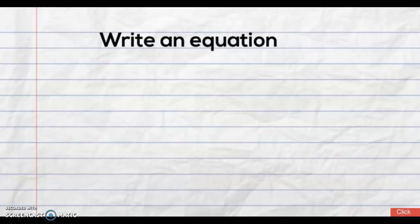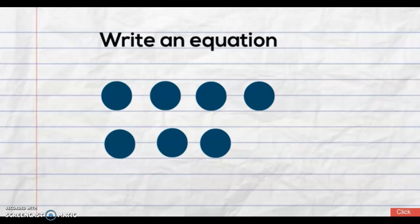Let's check our working now. We have one, two, three, four, five, six, seven, eight. So two times four equals eight.